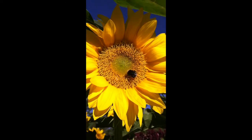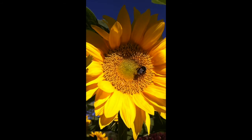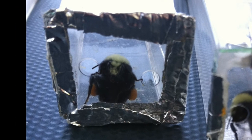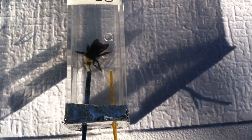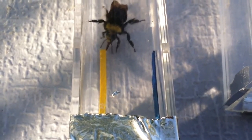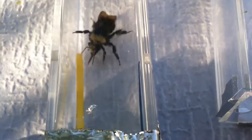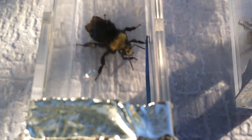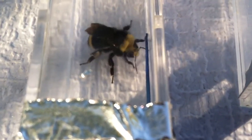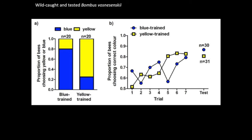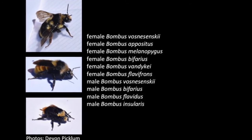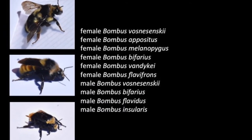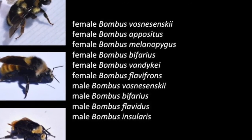We used both the multi-choice protocol and the single-choice protocol on wild Bombus vosnesenskii that were caught in the field and tested on site before being released. Here you can see a wild bee going to the yellow stimulus before going to the rewarding blue stimulus, and here a different bee goes to the rewarding yellow strip before going to the unrewarding blue strip. We found that both protocols worked in terms of wild bees actually learning in field settings. Although in this study we only report results from wild-caught Bombus vosnesenskii, we tried this on a handful of different Bombus species, both females and males, and found that it seemed to work in all cases.